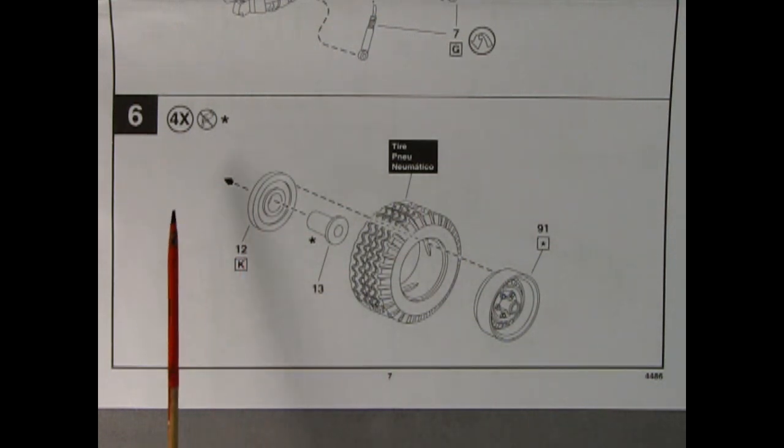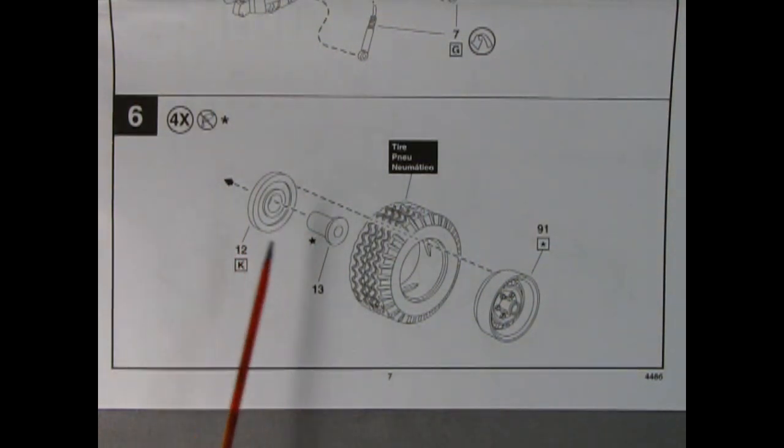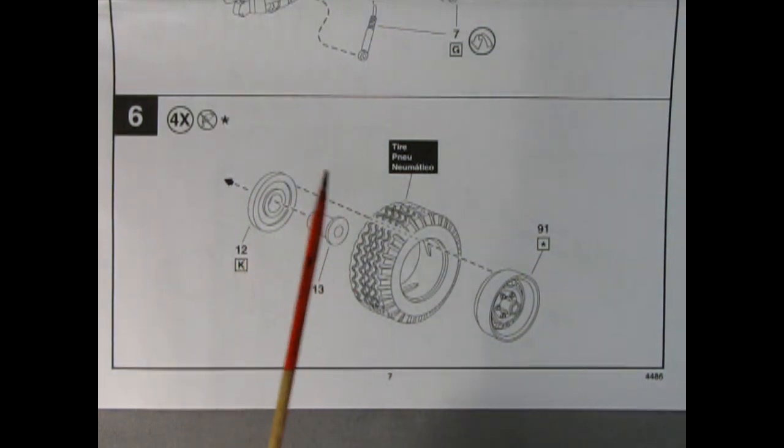Panel 6 shows a step that we need to do four times. This is our wheel assembly. We have the outer wheel itself, the tire, the wheel retainer, and the wheel back. Sandwich all these together and then put them onto those axle pins on your chassis.